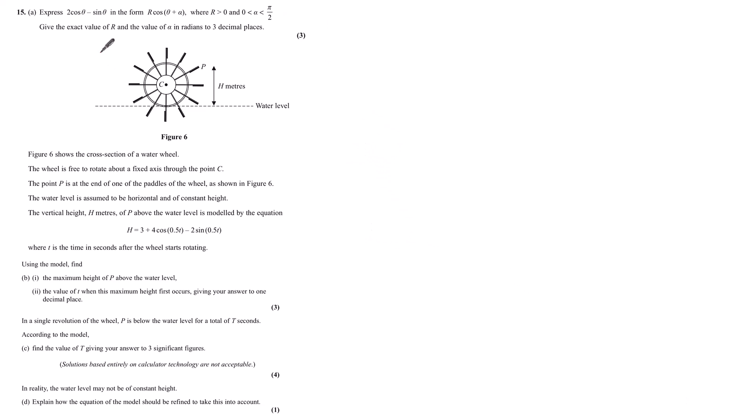Question 15, Part A. Express 2 cos θ minus sine θ in the form r cos(θ + α), where r is greater than zero and α is between zero and π over two. Give the exact value of r and find the value of α in radians to three decimal places.